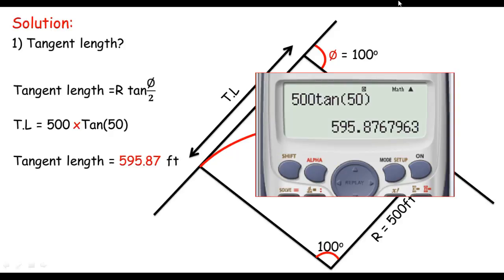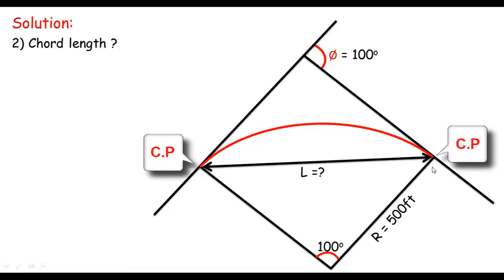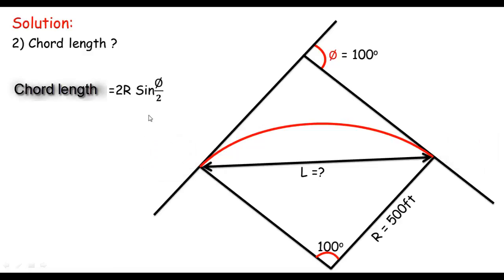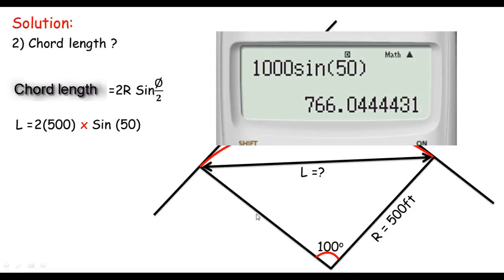Next, let me calculate the chord length of the curve. The chord length is the distance between the two tangent points of the curve. The formula is C = 2R × sin(Δ/2), so L = 2 × 500 × sin(50°), giving us 766.04 feet as the chord length of the given curve.